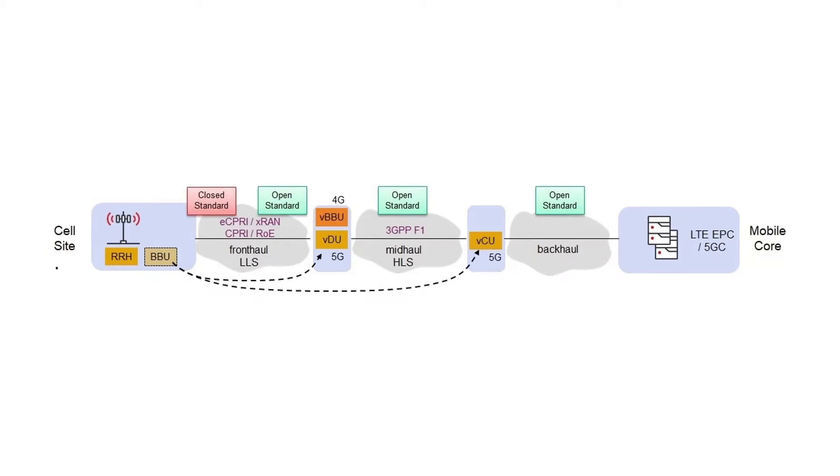So traffic is backhauled from the towers to the mobile core. And in 4G, it's called the evolved packet core. In the core, subscribers and sessions are managed. It's also where traffic is moved from the telephone or cellular network to the packet network or the internet.